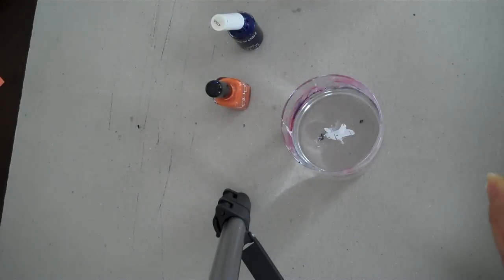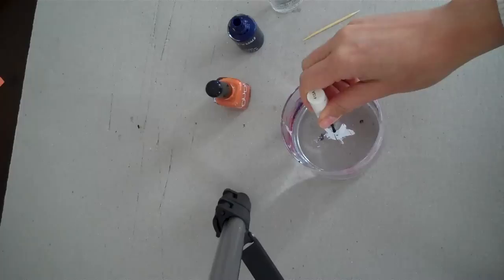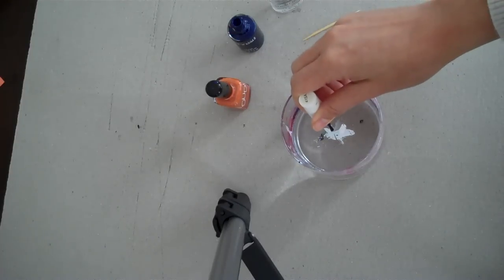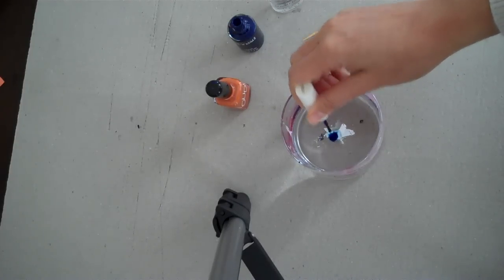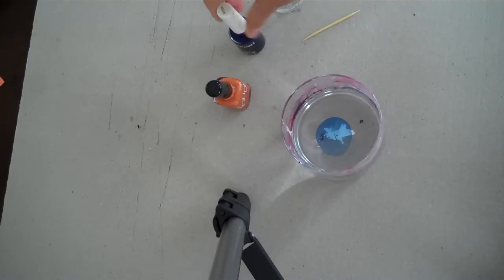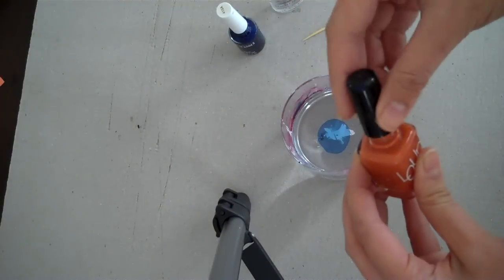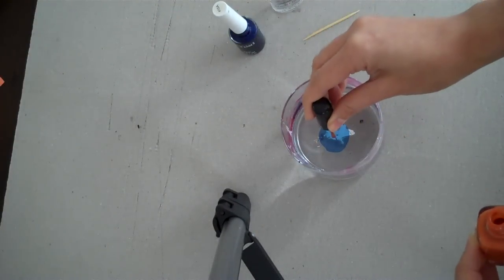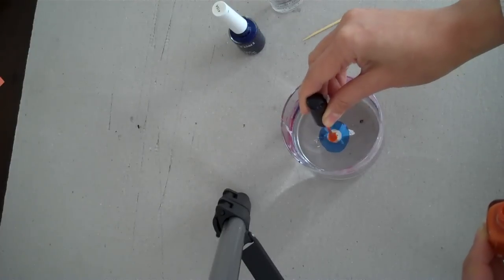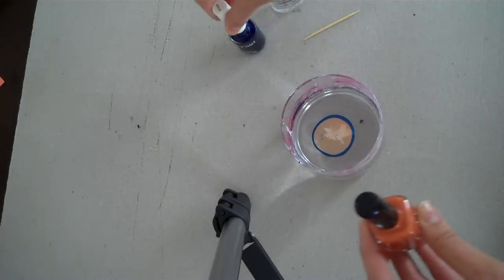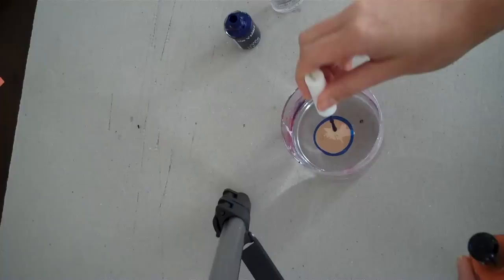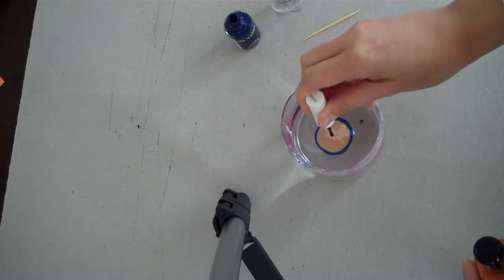And another thing you're going to need is a Q-tip and a toothpick. So I'm going to start with my colors now. And then you want to just, I already shook the nail polish so all you want to do is just make sure you get a nice big glob and let it drip into the water. I know in the first tutorial I didn't say that, but try not to get your brush to touch the water. Just let it drip and fall into the water.